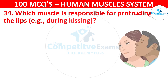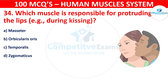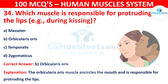Question 34. Which muscle is responsible for protruding the lips, like during kissing? Your options are Masseter, Orbicularis oris, Temporalis, or Zygomaticus. The correct answer is B, i.e. Orbicularis oris. The orbicularis oris muscle encircles the mouth and is responsible for protruding the lips.